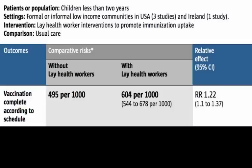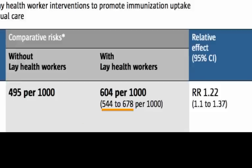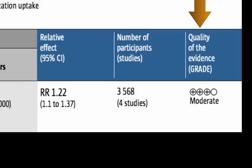These numbers are our best estimate of what happened based on results from the different studies. As in all research, there's some amount of uncertainty — the estimate may be too low or too high. The confidence interval is a range of two numbers within which we are fairly certain the result does lie, sort of like a best case, worst case scenario. For immunization, the worst case scenario is 544 children per 1,000 vaccinated, which is still more than for the group with no lay health worker visits. We also evaluated the quality of evidence on a scale of very low, low, moderate or high, based on factors such as how well the research was carried out or how much results varied from study to study. The immunization evidence was rated moderate quality.